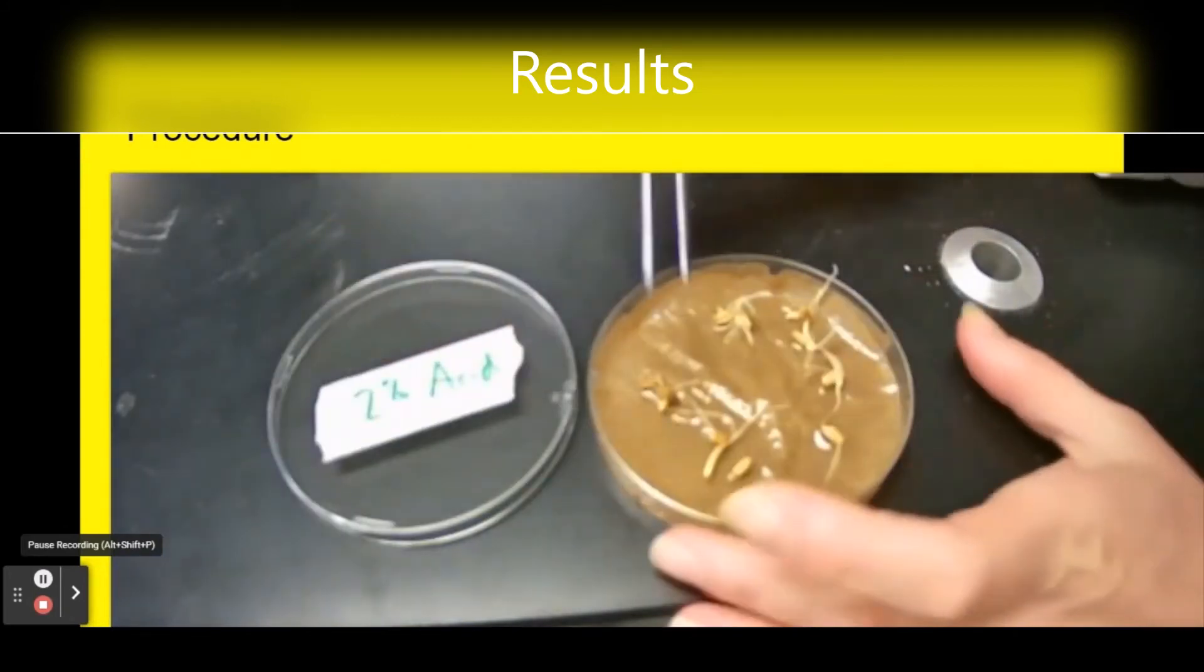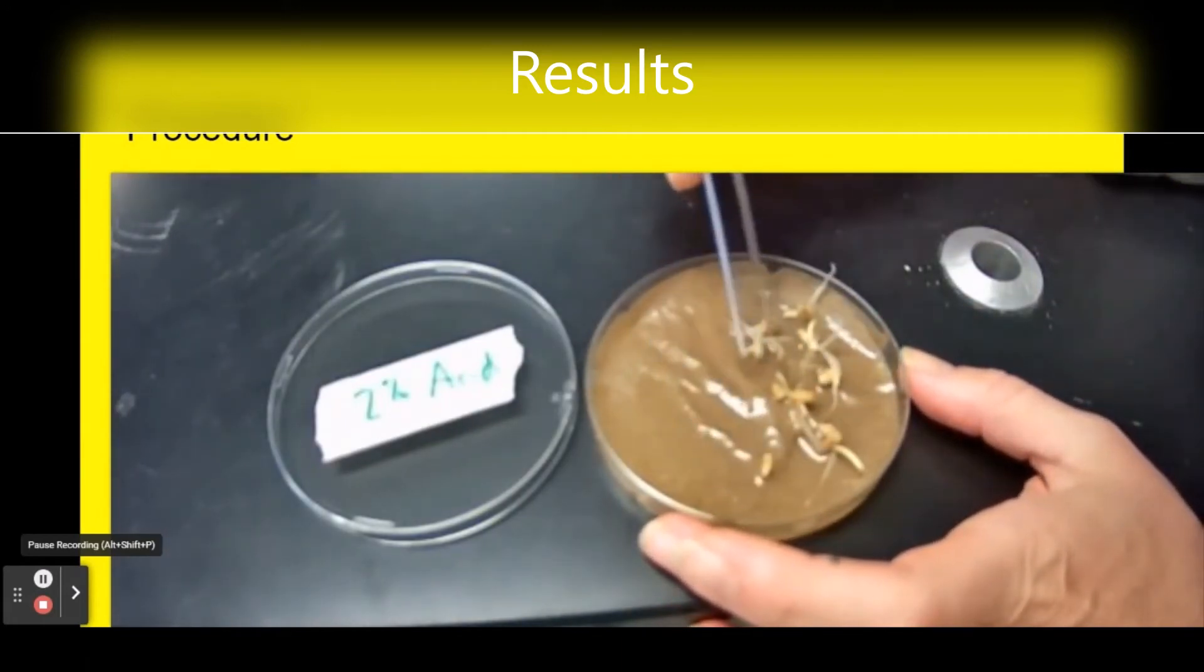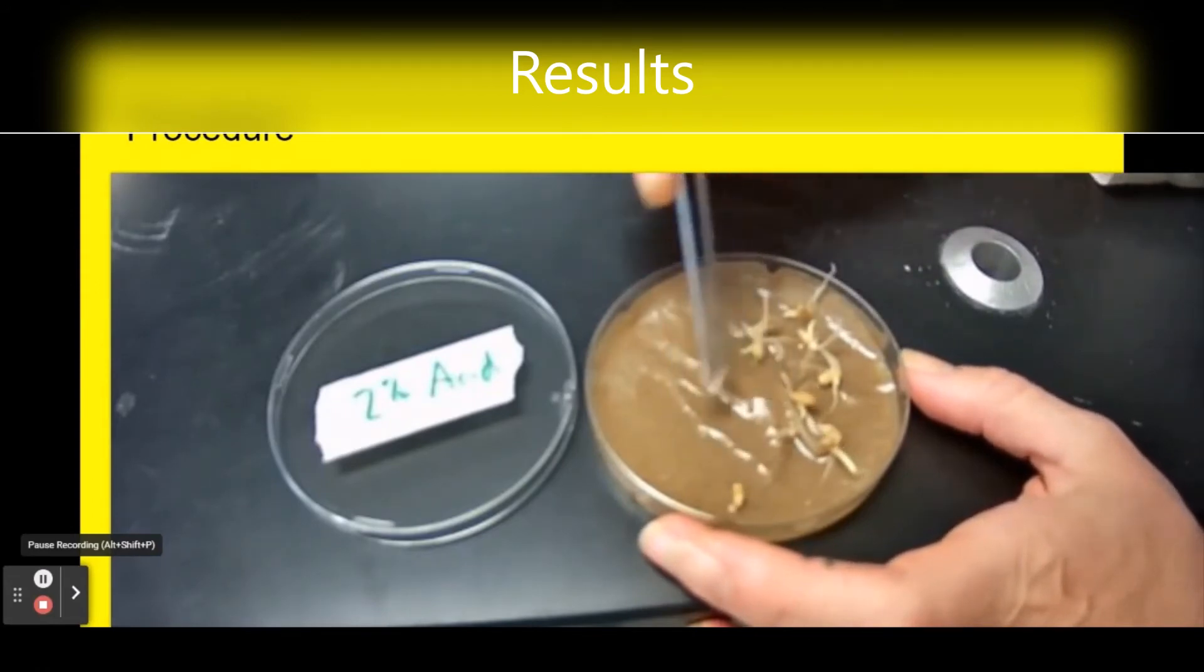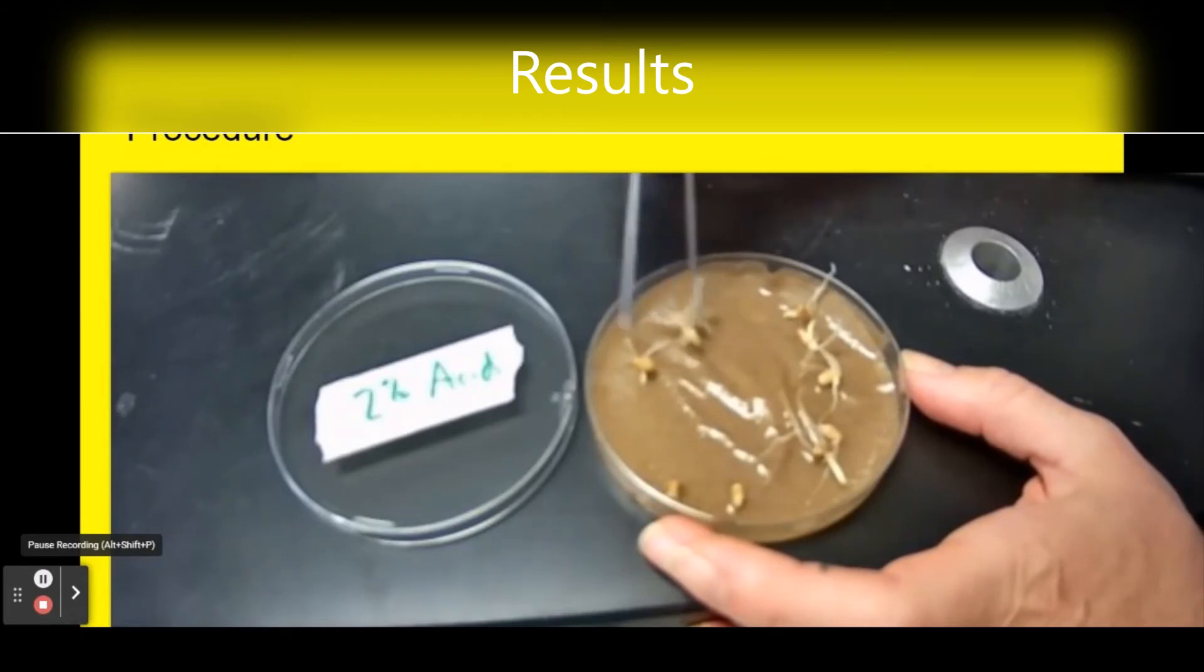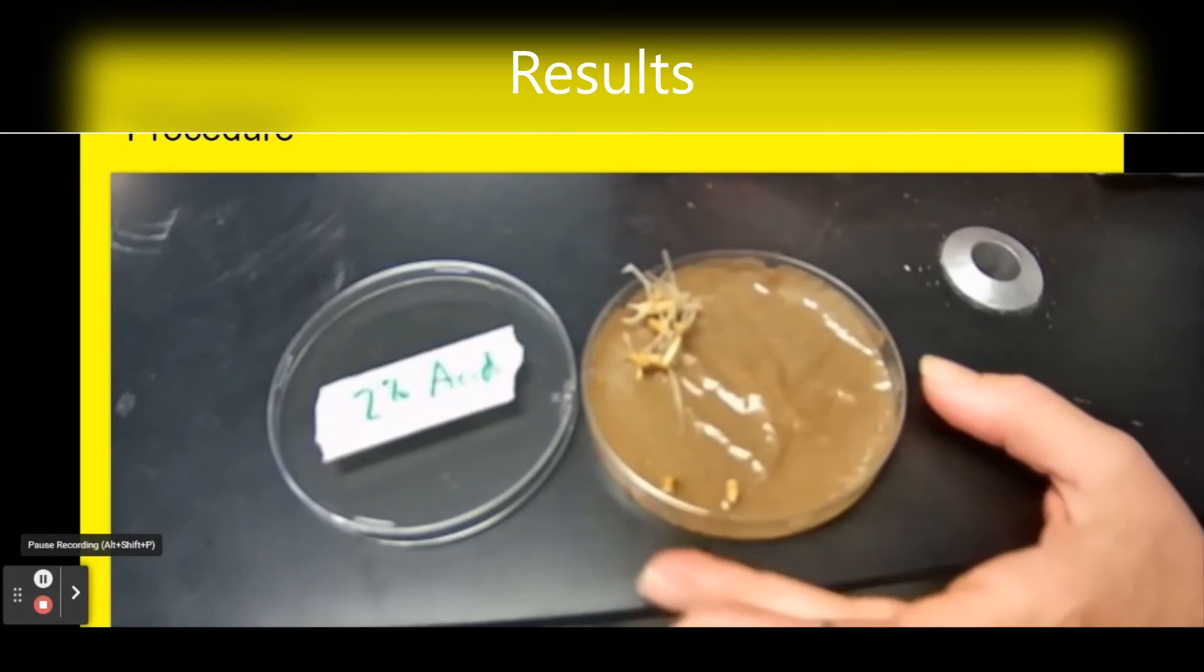Here we've got two percent acid. There's two seeds that didn't germinate. One, two, three, four, five, six, seven, eight seeds germinated and two did not.